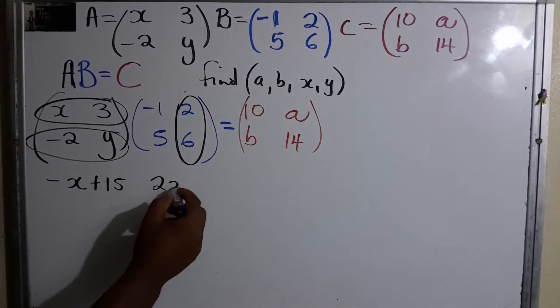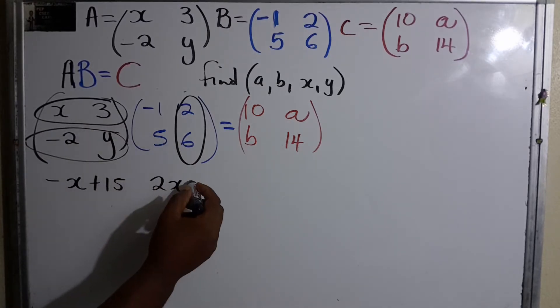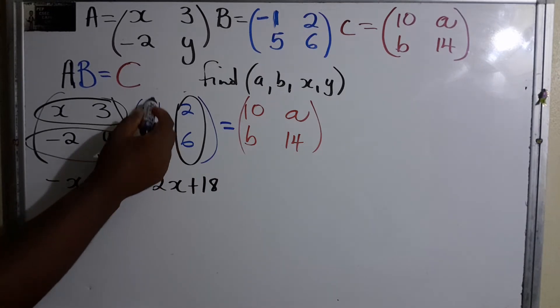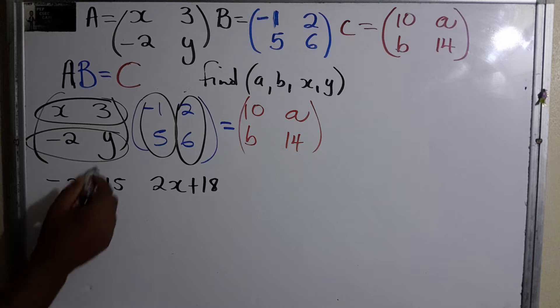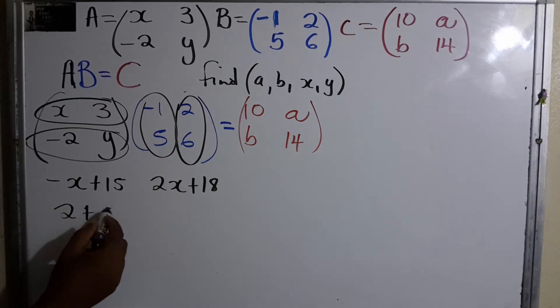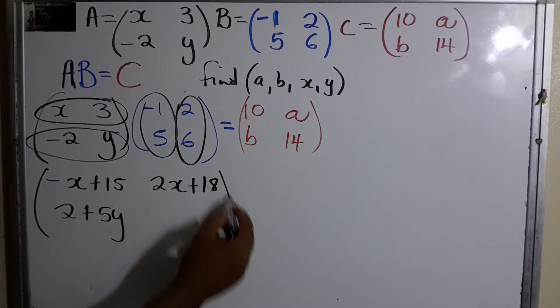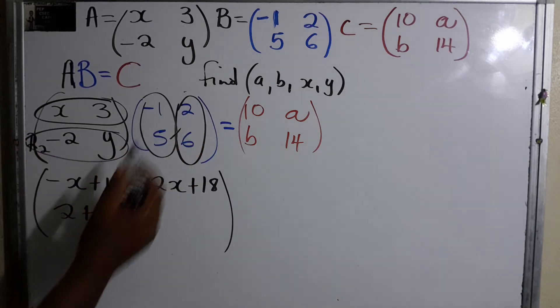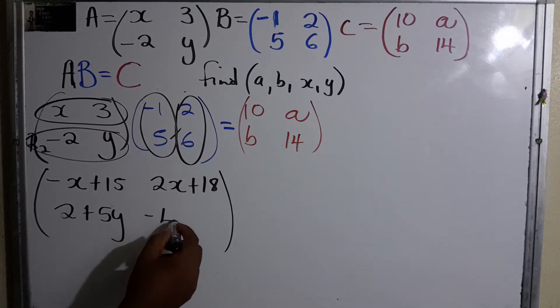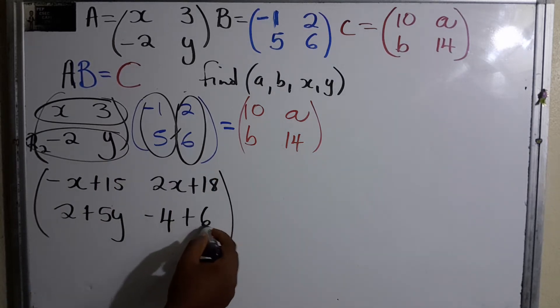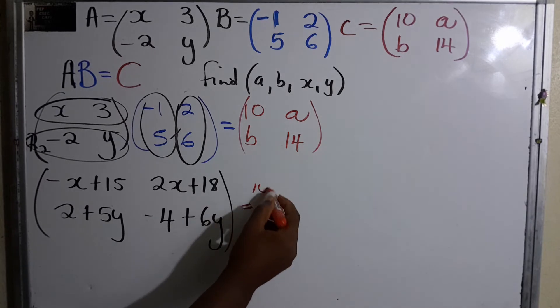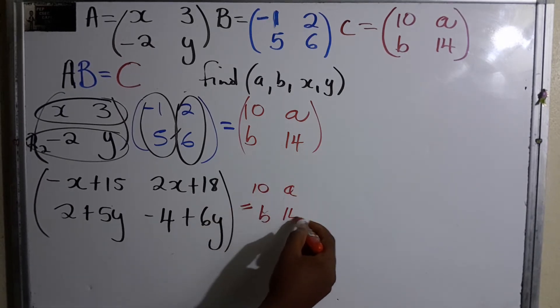Onto this column now: row 1 column 2. x times 2 is 2x. 3 times 6 is 18. -2 times -1 is positive 2. y times 5 is 5y. Row 2 column 2: -2 times 2 gives us -4. y times 6 is 6y.